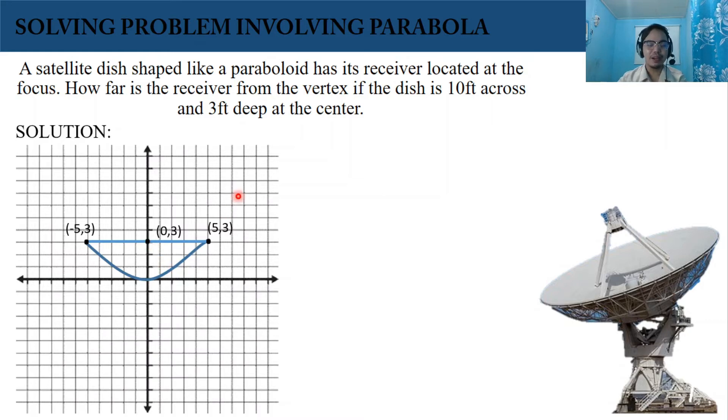Since our parabola opens upward and the axis of symmetry is the y-axis, we will use this equation: x² = 4py.